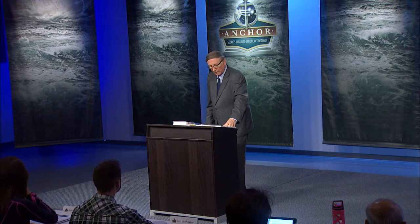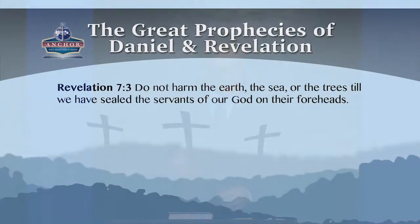Point number two: God's people at the end will have the seal on their foreheads. And it is the law of God that is written on the forehead — in the mind. Notice Revelation 7, verse 3: 'Do not harm the earth, the sea, or the trees, till we have sealed the servants of our God on their foreheads.' Notice the forehead. What's behind your forehead? Your frontal lobe, your mind, your reasoning, your thinking.